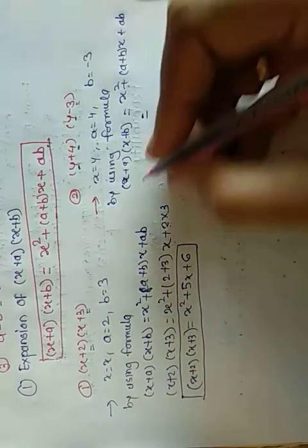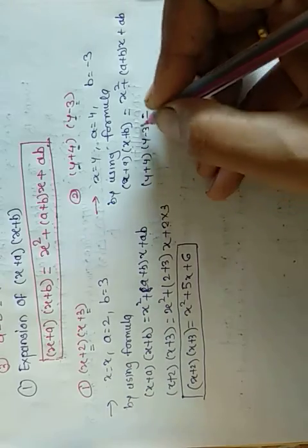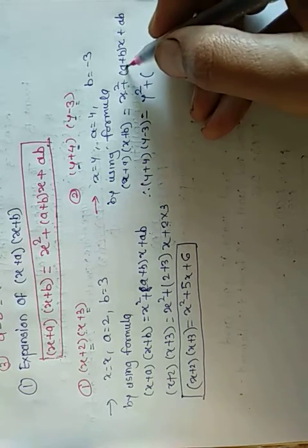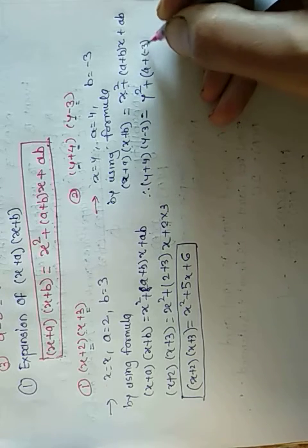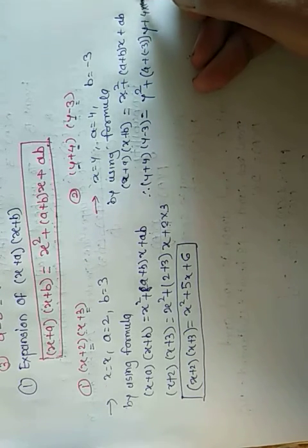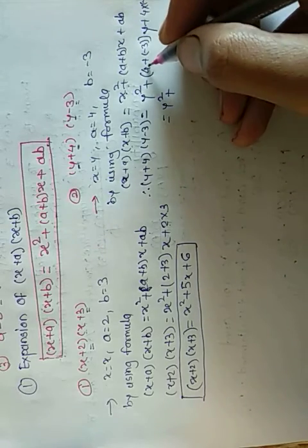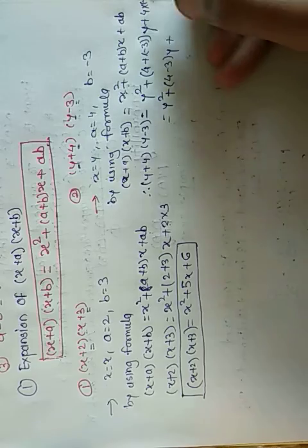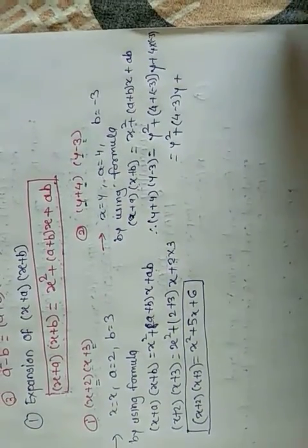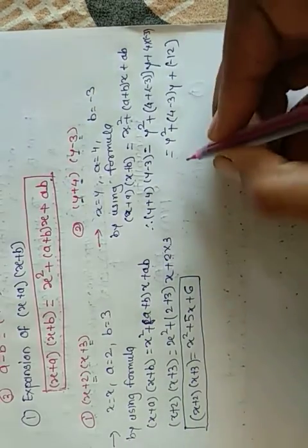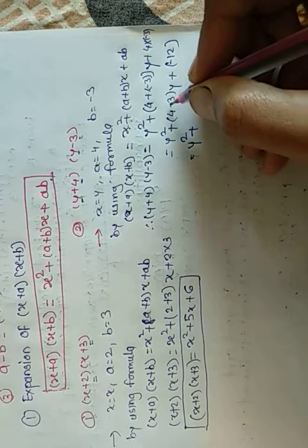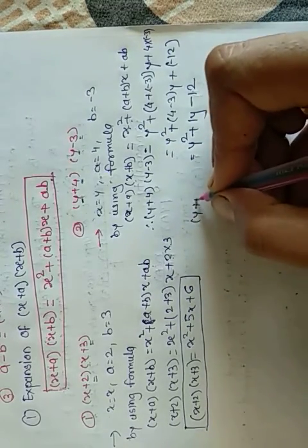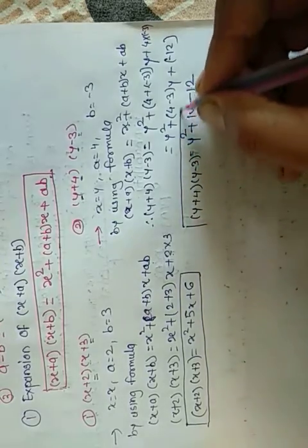Now put the values: (y+4)(y-3) = y² + (4 + (-3))y + 4×(-3) = y² + (4-3)y + (-12) = y² + y - 12. This is the answer.